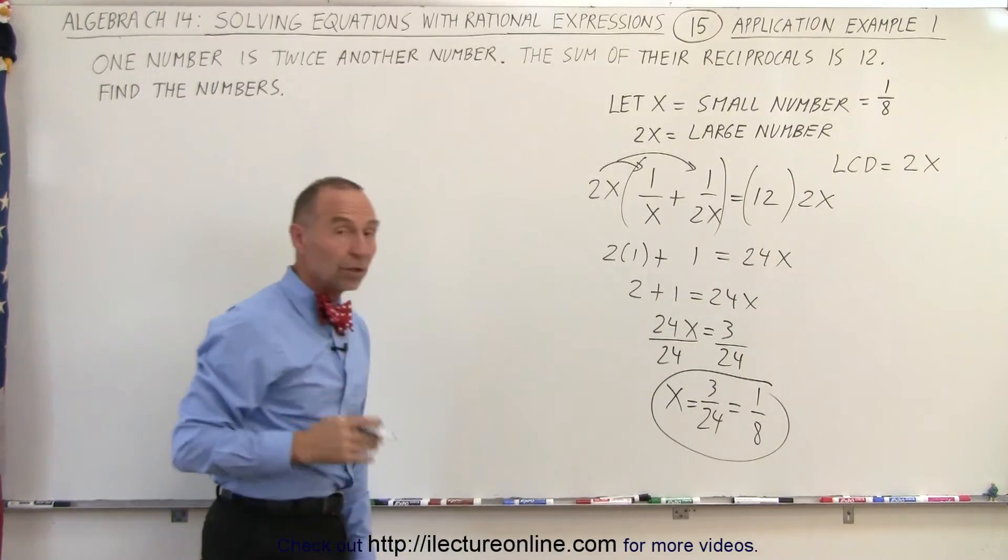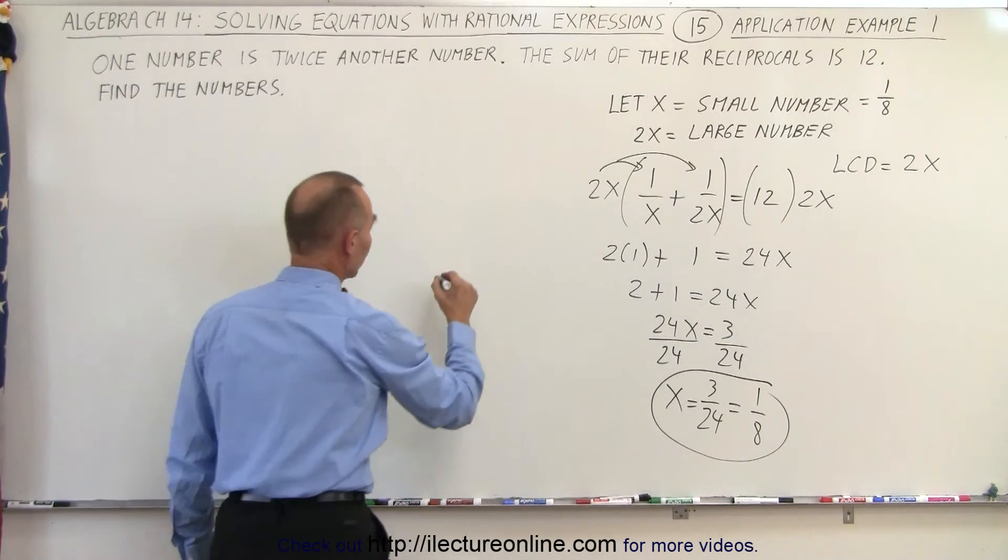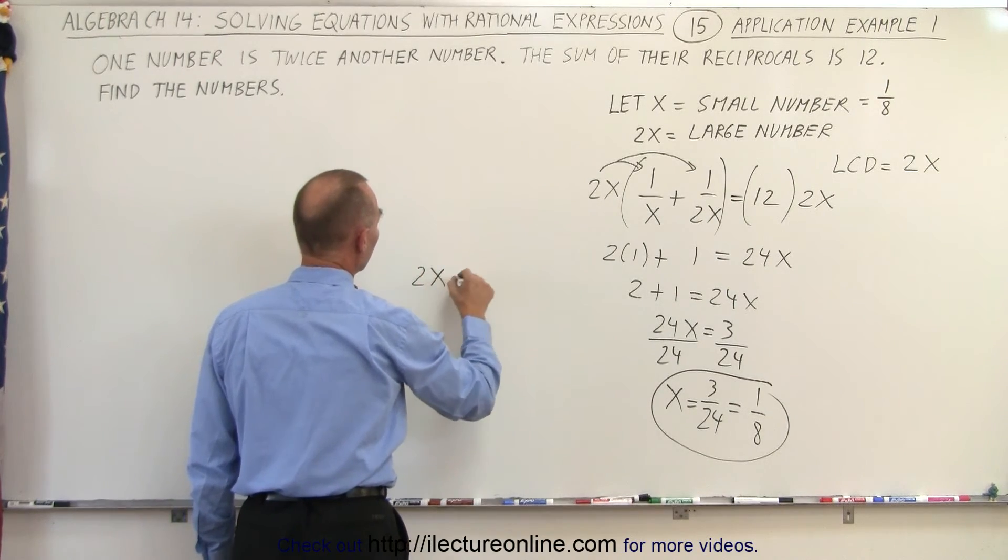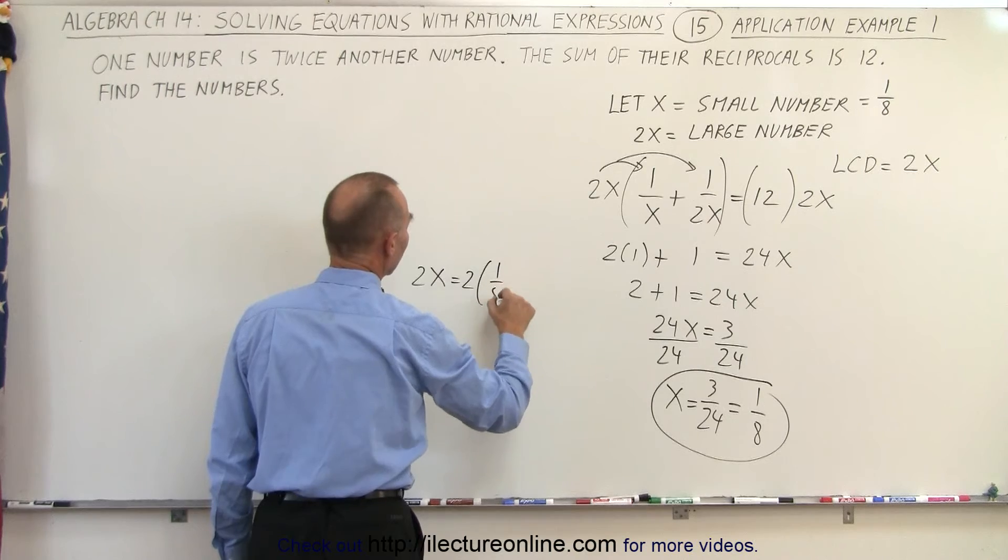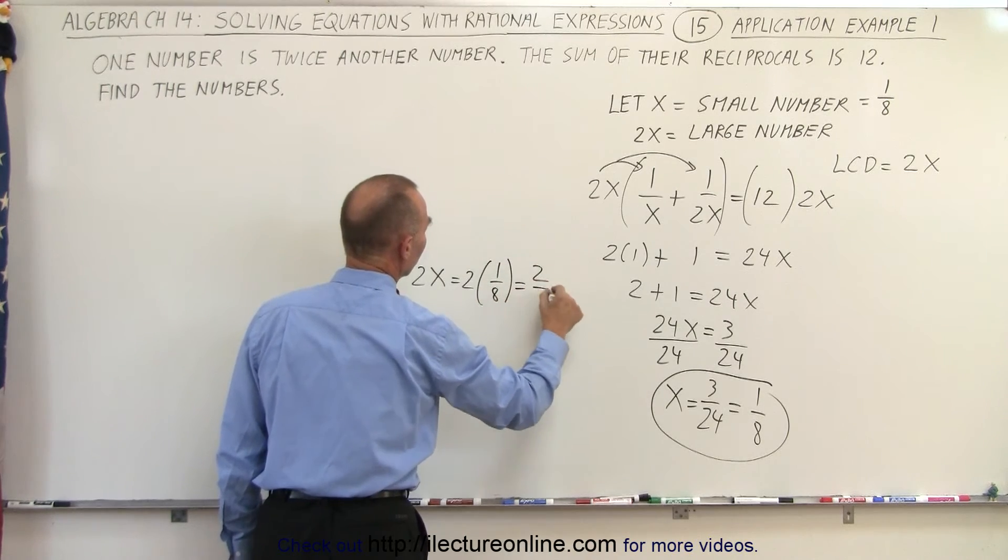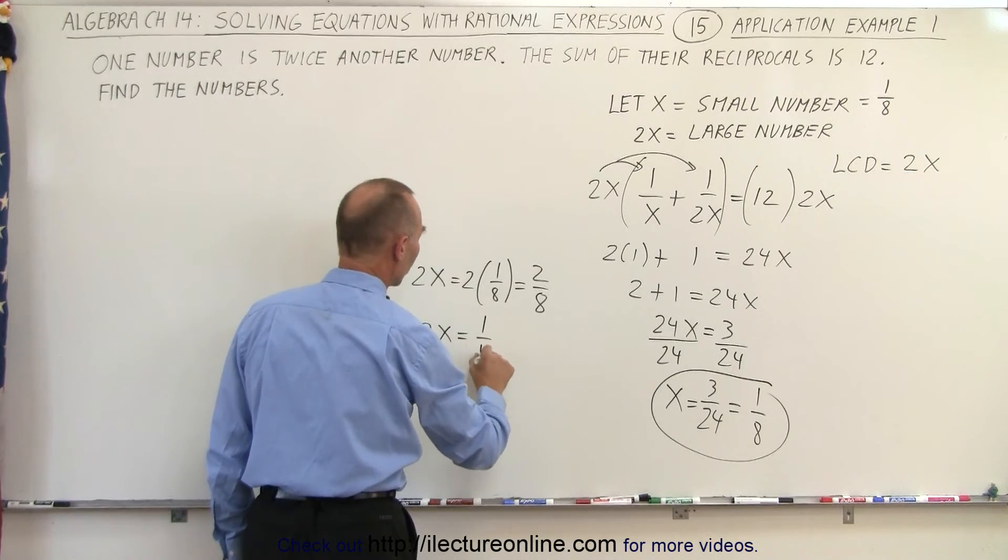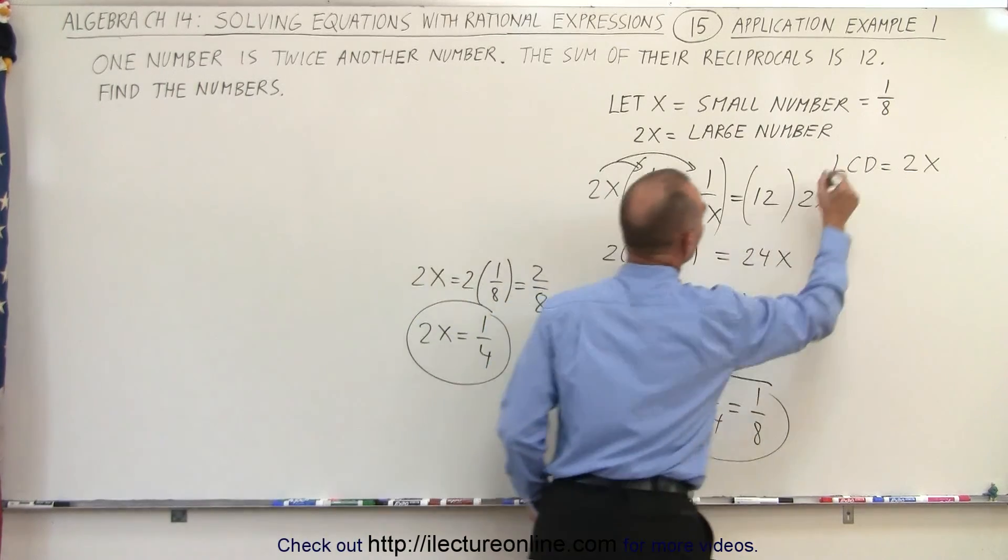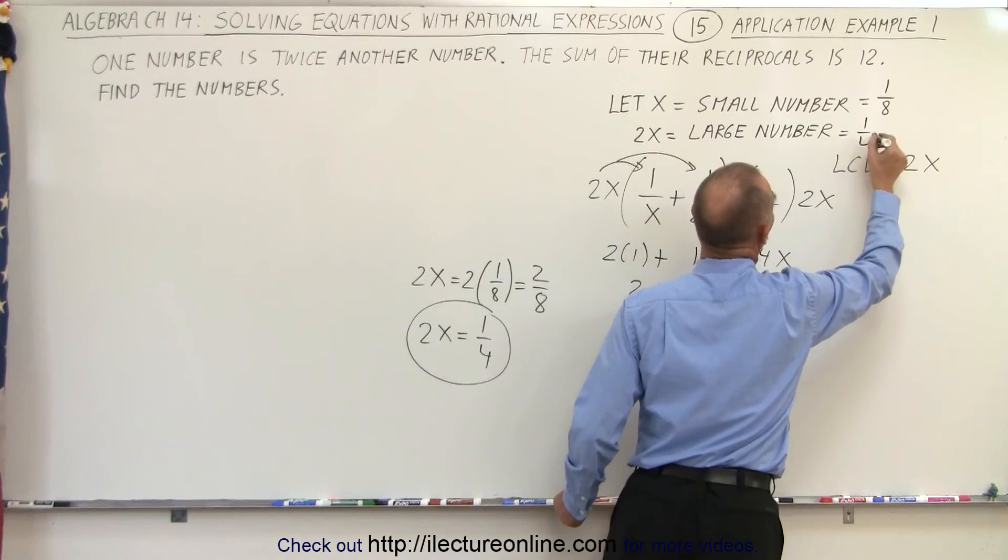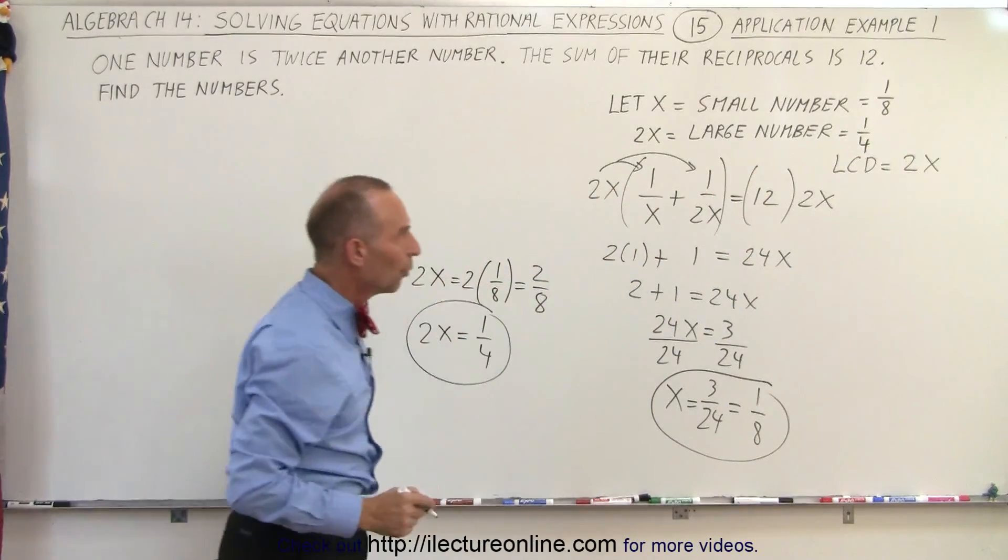What about the large number? Well, the large number is twice as large as the small number. So 2x would be equal to 2 times 1 over 8, which is equal to 2 over 8. And of course, 2 over 8 can be reduced to 1 over 4. So the large number is therefore equal to 1 over 4.